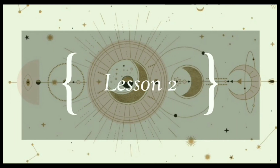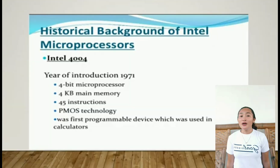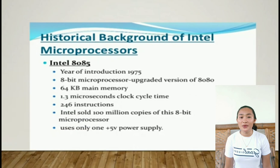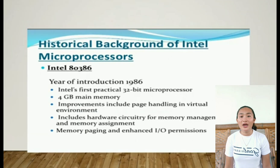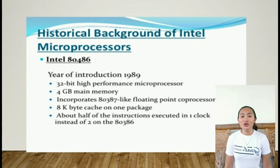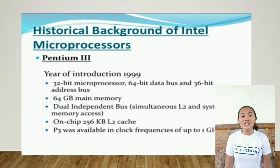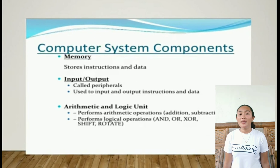So let's go to listen to the evolution of microprocessor. Only once in a lifetime does a new invention come about to touch every aspect of our lives. Such a device that changes the way we work, live, and play is a special one indeed. The microprocessor has been around since 1971, but in the last few years, it has changed.